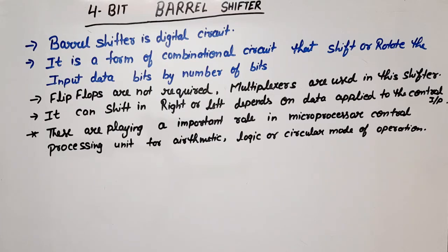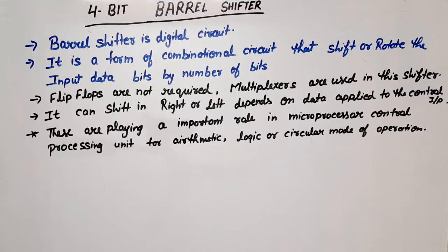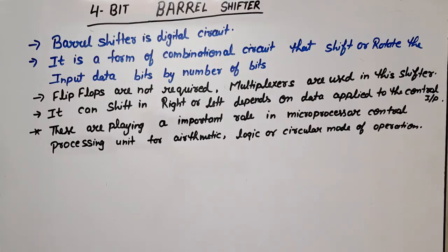We use the barrel shifter to shift bits and also to rotate bits. The barrel shifter can shift bits in the right direction as well as the left direction — that depends on the control input. How many bits are shifted depends on how many bits the shifter is designed for.